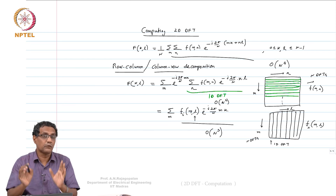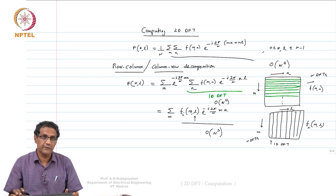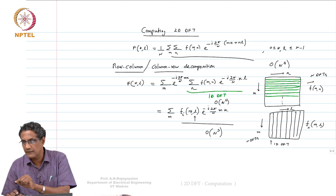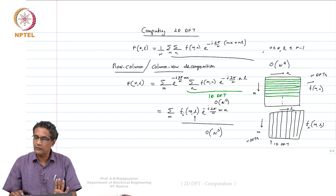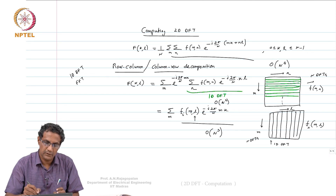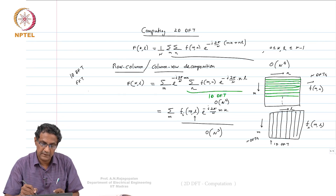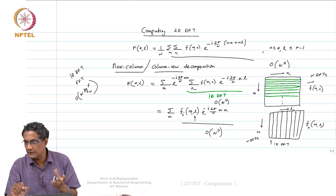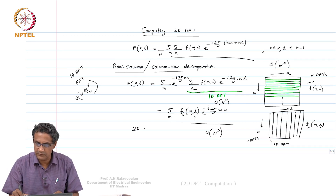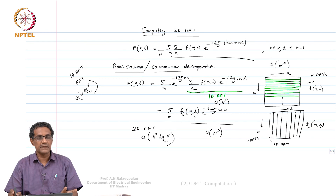Your order of complexity: if you do full brute force on F of K comma L, that would be order N to the power 4, but if you use the separability property it reduces to order N cubed. Now if you had a 1D fast Fourier transform — an FFT — the order complexity is N log base 2 of N. With 2N DFTs because of separability, the 2D fast Fourier transform will have order N squared log base 2 of N.